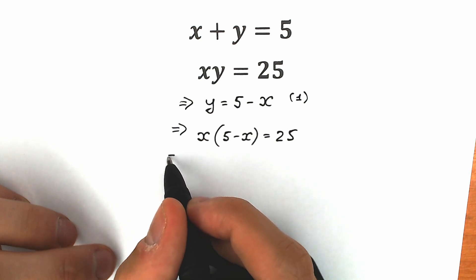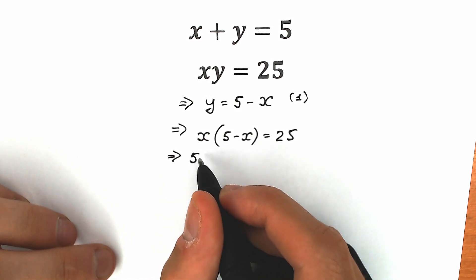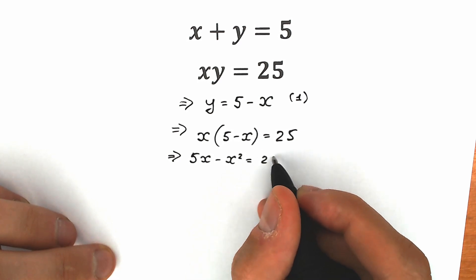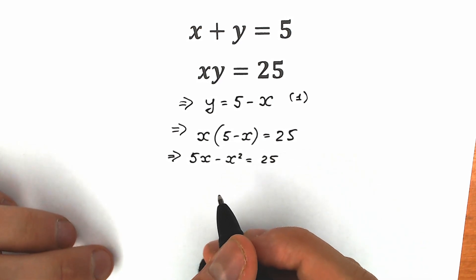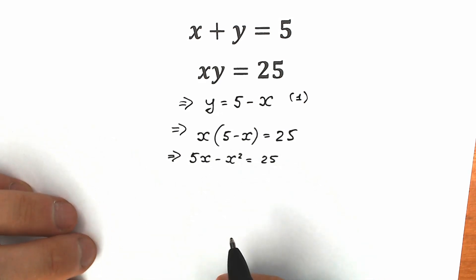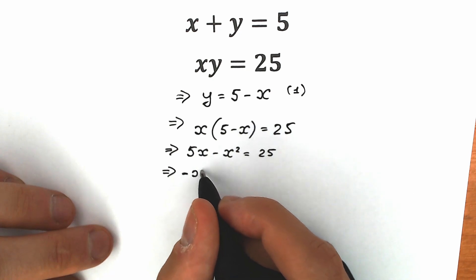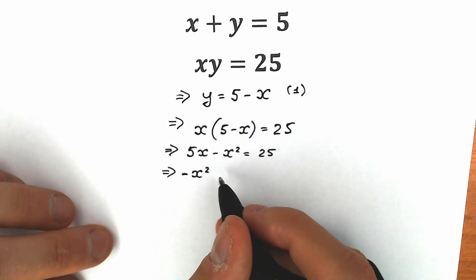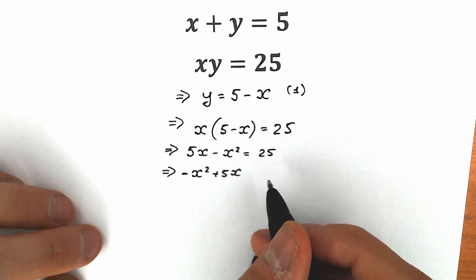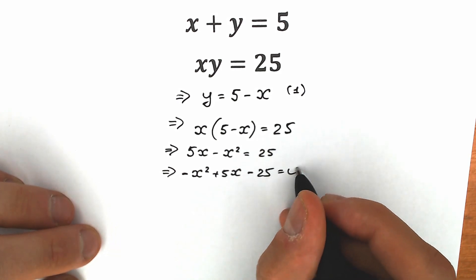Let's simplify this a little bit — this is a basic school question. So we will have 5x minus x squared equal to 25. It looks like a quadratic equation, but we prefer a different order. We prefer minus x squared in the first position, so we have minus x squared plus 5x, and bringing 25 to the left side gives minus 25 equal to zero.